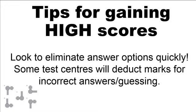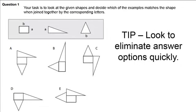A really important tip when taking Spatial Reasoning Tests is to look to eliminate answer options very quickly. Here's a first sample question. Your task is to look at the given shapes — A, B, C, D, and E — and decide which of the examples matches the shape when joined together by the corresponding letters. We have three shapes at the top; we join them by corresponding letters and find which of the five options it matches. This is a very basic two-dimensional Spatial Reasoning question.